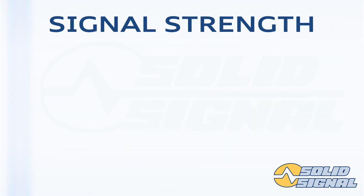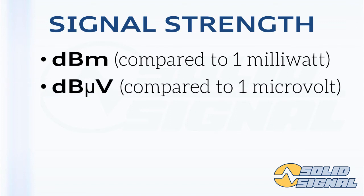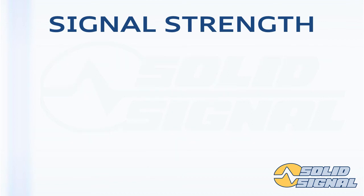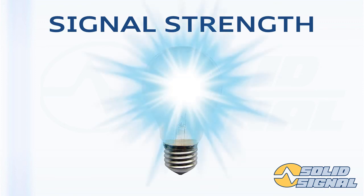Signal strength is measured usually using one of two measurements. dBm is a measurement compared to one milliwatt. Or, dB microvolts — which looks like dBµV, even though the U is really a Greek letter mu — is relative to one microvolt. dB microvolts are relative to the impedance of the cable; dBm is not. The signals used for antenna, satellite, and cable are extremely weak — so weak they wouldn't power an average light bulb. The typical strength for a signal running through a wire is negative 40 dBm, or one ten-thousandth of a microwatt, or one ten-millionth of a watt.